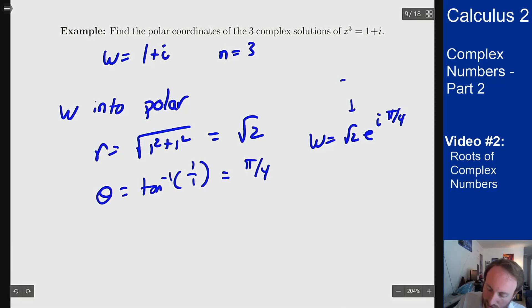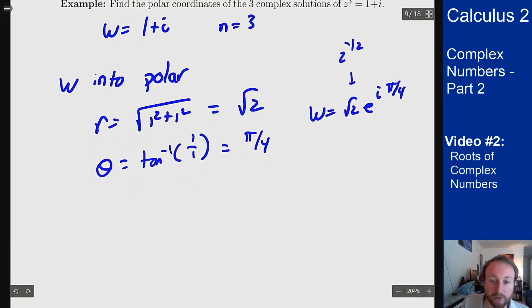So since this here is 2 to the 1 half my modulus for the z's will always be 2 to the 1 sixth. It's always the cube root of that modulus. So we'll get z1 which is 2 to the 1 sixth times e to the i, divide the angle by 3, pi over 12.